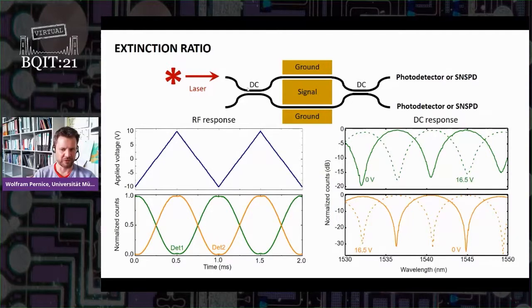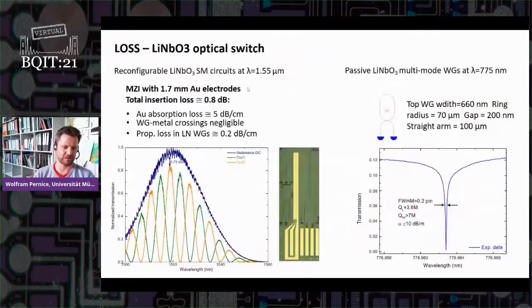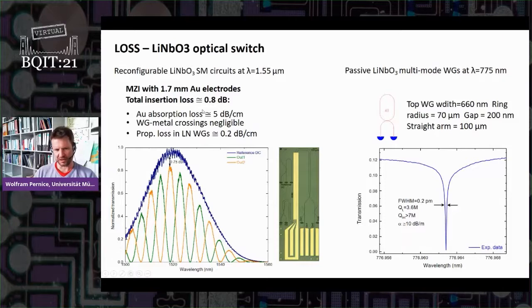But I can also give you some further numbers for this device. So if you look at the loss parameters of such modulators around 1550, they have insertion loss of about 0.8 dB. This is mostly limited still by loss at the electrodes that are close enough to the waveguide, but you can move them further if needed. The insertion loss inside the waveguide at 1550 is about 0.2 dB per centimeter. So over the millimeter length structure, this is not too significant.